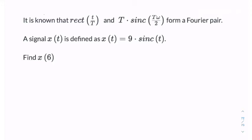So here, the question reminds us that the rect function and the sinc function form a Fourier pair. And it goes on to tell us that x of t is a sinc function. So we know what x of t looks like in the time domain. And the question is to find x of 6.